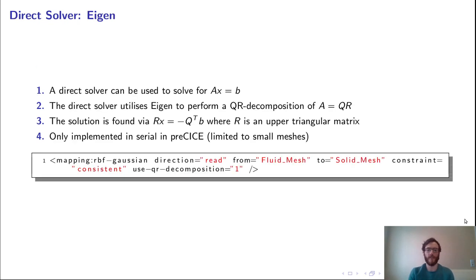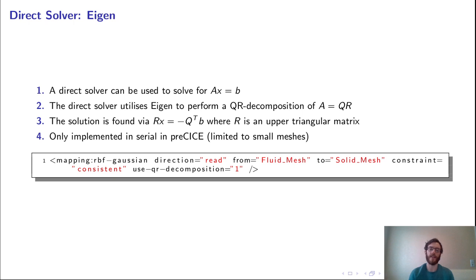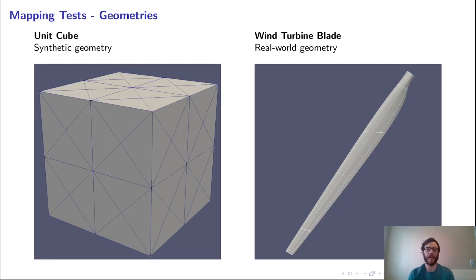Another method is to use a direct solver via Eigen, which performs a QR decomposition on matrix A, resulting in R·x = −Q^T·b, solved with a single backward substitution since R is an upper triangular matrix. However, this is only implemented in serial in Precise — even if running in parallel, all vertices are sent to the master rank and QR decomposition is done there, so the mapping step is always serial. To use this instead of PETSc, add use_qr_decomposition = 1 to your solver config.